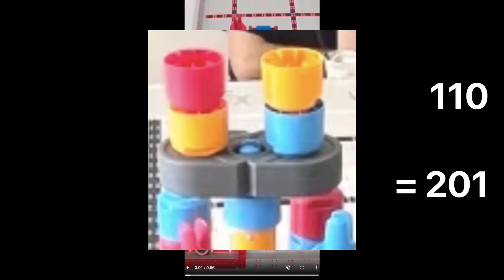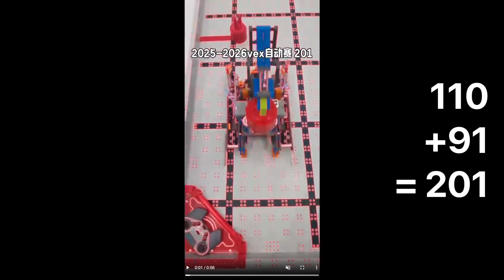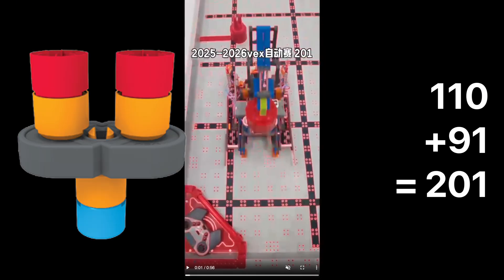This 110 point stack, if we subtract it from 201, we get 91 points. And 91 points is just a normal underground stack. So we basically already know exactly how they got that 201 points.